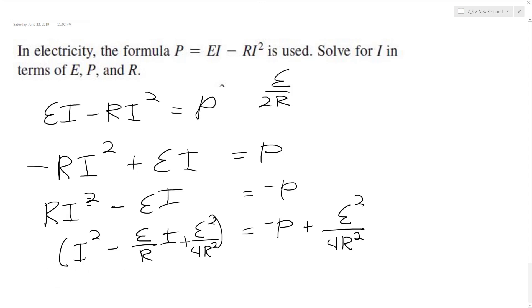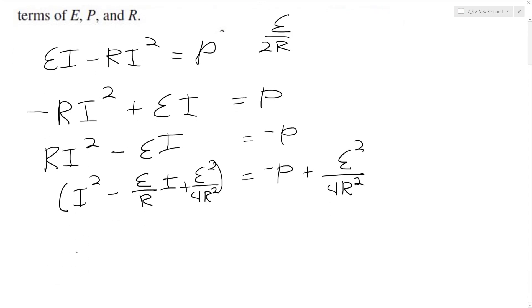But now I can factor this to be I minus E over 2R squared is equal to negative P plus E squared over 4R squared.